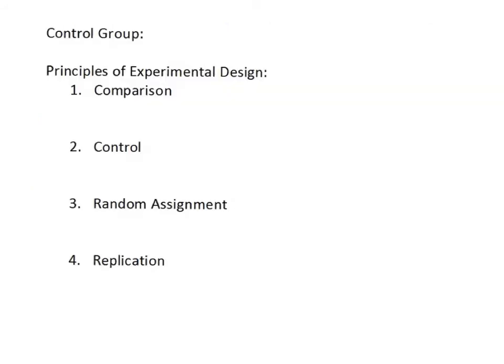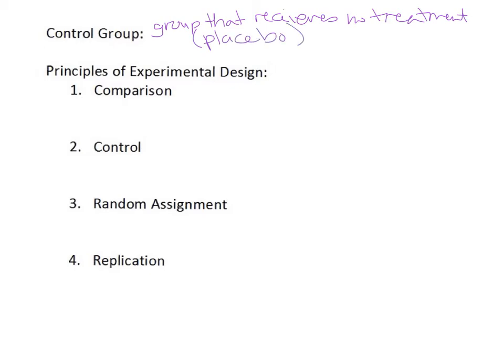Another vocab term is control group — a treatment group that generally receives no treatment. Often they receive a placebo, which is a pill that looks like real medicine but has no effect, sometimes just a sugar pill. In example one with the head lice medicines, a third group receiving no medicine at all would have made for a better-designed experiment.